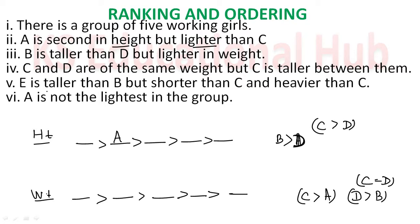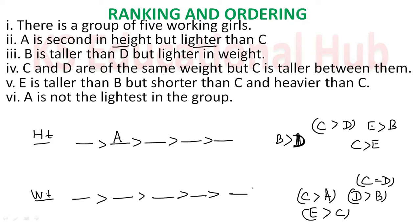E is taller than B but shorter than C — so in height, E is above B but below C. And E is heavier than C — meaning in weight, E's weight is more than C. Then the last statement: A is not the lightest in the group. So A's position will never be at the lightest end.